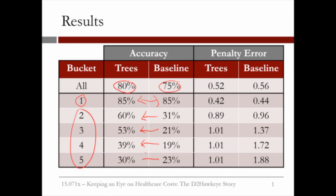There is an improvement from 23% to 30% for bucket 5, not as big as before, but there is indeed an improvement. Notice also the improvement on the penalty: from 0.56 to 0.52 overall, a small improvement in bucket 1, but a significant improvement as we increase on the buckets. For example, for bucket 5, the penalty error decreases from 188 to 101 — a substantial improvement.